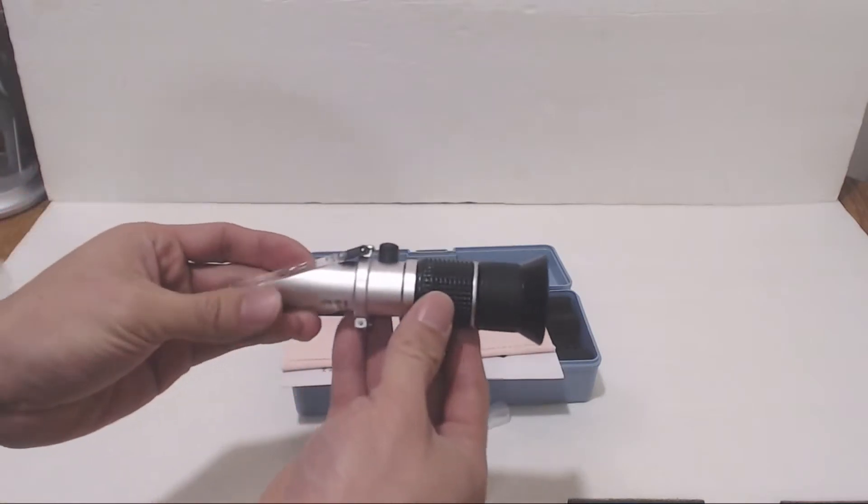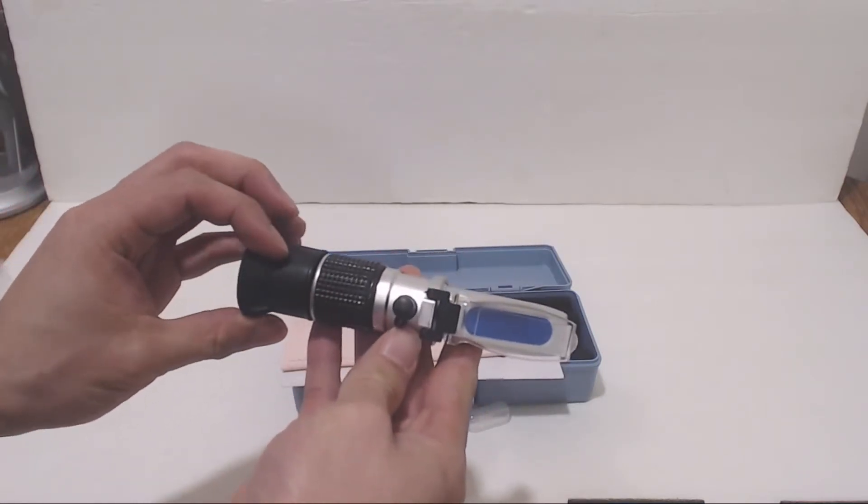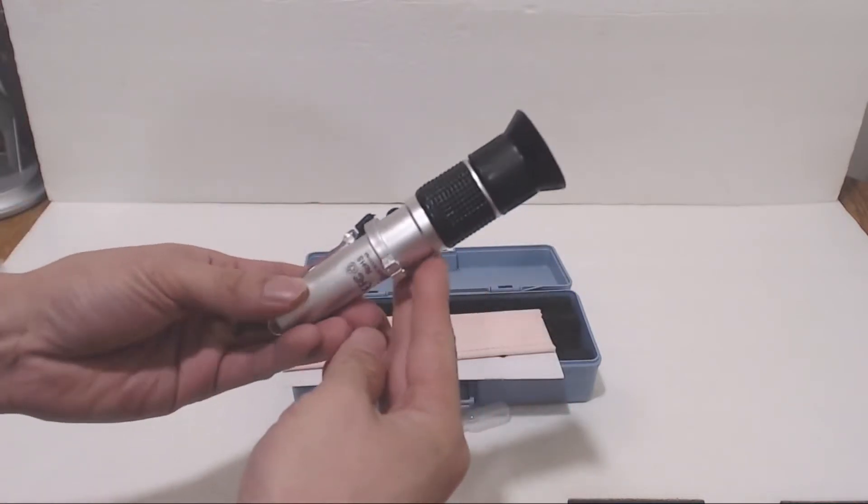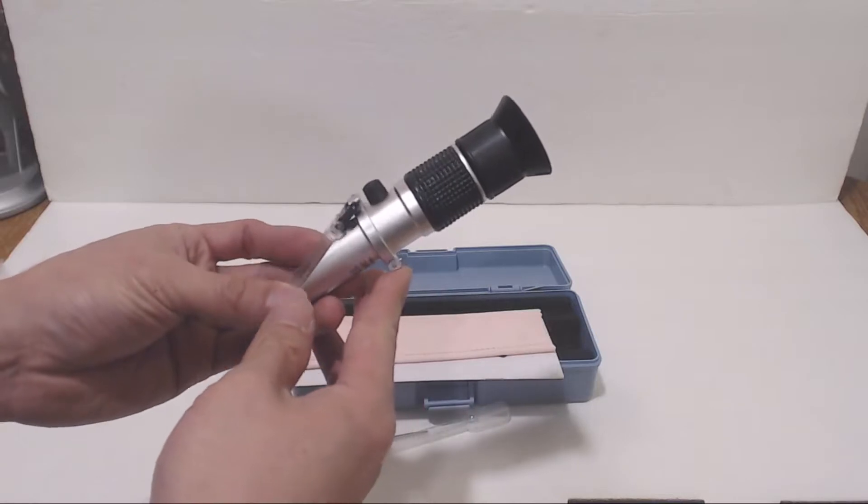The refractometer is a tool that can measure the sugar content of a liquid using a scale called Brix, which is the amount of dissolved sugar in an aqueous solution. So 1 degree Brix basically means the solution is 1% sugar.